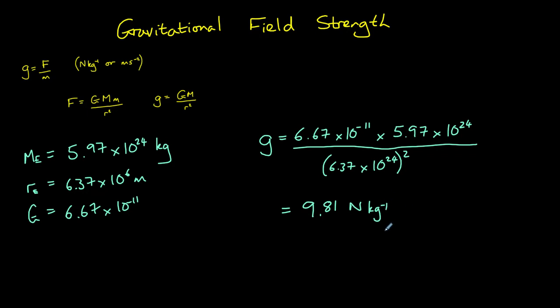A quick note: gravitational field strength is a vector, so if you're asked to calculate the gravitational field strength due to multiple gravitational fields, you need to work each one out separately using the mass and the distance from each planet, and then combine them as vectors.